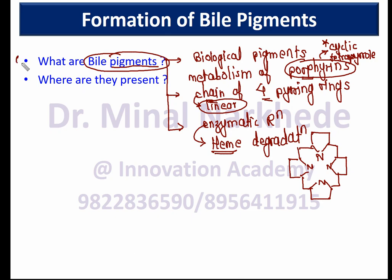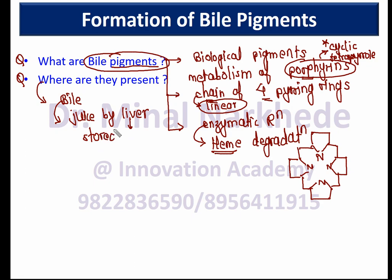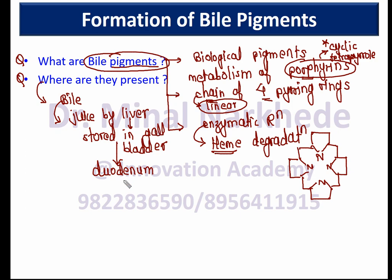The second question is where are bile pigments present? They are present in bile. Bile is a juice or secretion produced by the liver and stored in a small sac called the gallbladder. From the gallbladder, bile is added to the small intestine at a U-shaped region called the duodenum, which is the site where bile juice enters the small intestine.